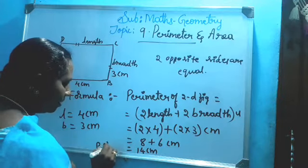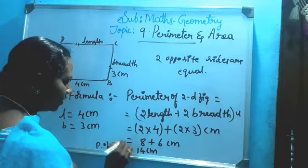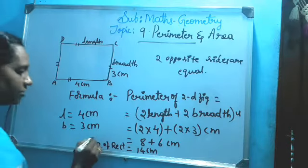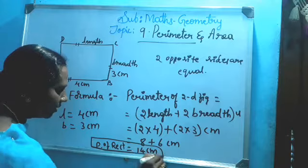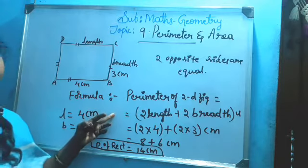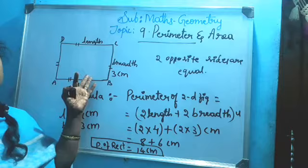Now multiply both. Two fours are eight, plus two threes are six centimeters. Now add it: eight plus six equals fourteen centimeters. See, it is the perimeter of which figure? Rectangle.